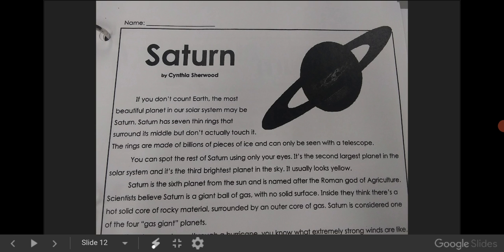Saturn. If you don't count Earth, the most beautiful planet in our solar system may be Saturn. Saturn has seven thin rings that surround its middle but don't actually touch it. The rings are made of billions of pieces of ice and can only be seen with a telescope. You can spot the rest of Saturn using your eyes. It's the second largest planet in the solar system and it's the third brightest planet in the sky. It usually looks yellow.